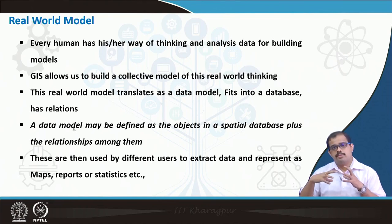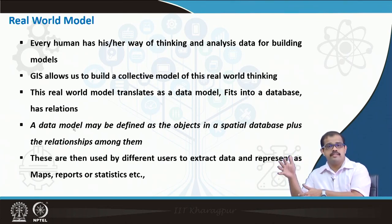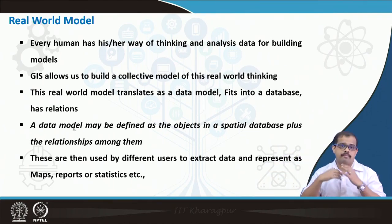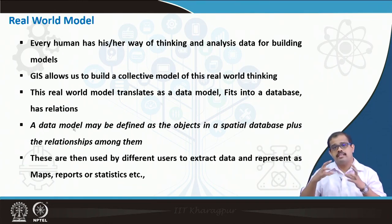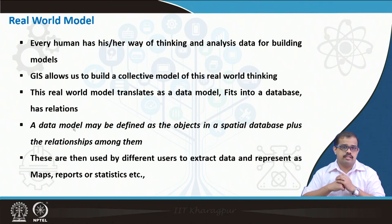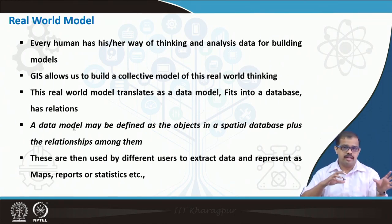When looking at data models, we have different kinds: vector data model and raster data model. The vector data model has different kinds of representative models whereas the raster data model has its own different types of representation. We will also look at how each data model has advantages and disadvantages. Please keep in mind we have two types of data models — one is vector and the other is raster.